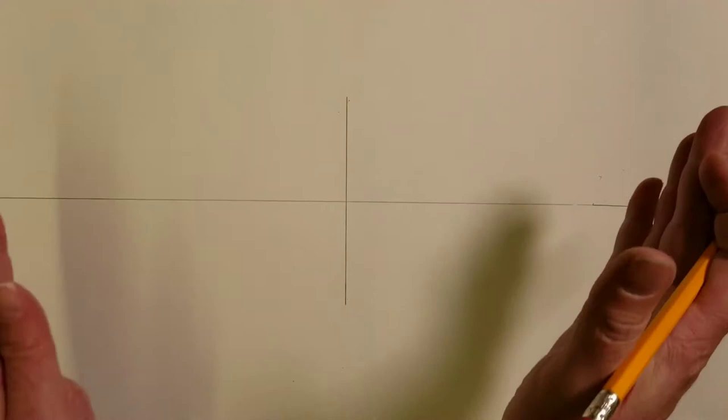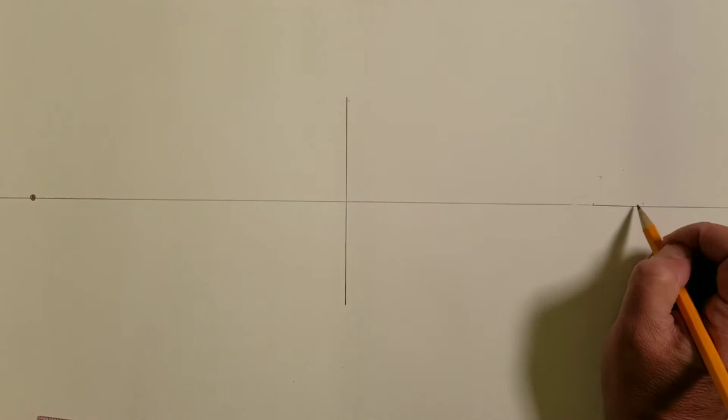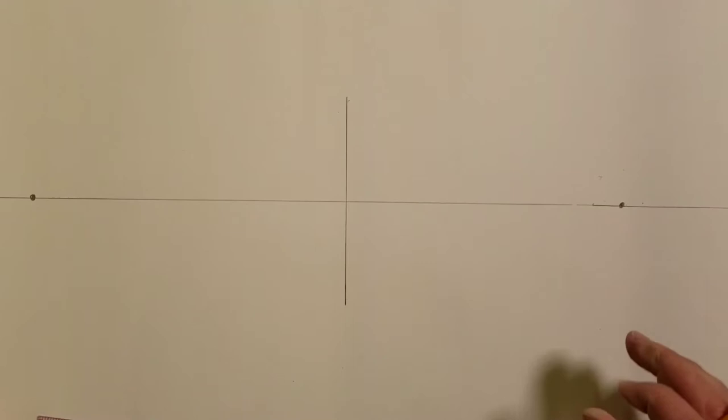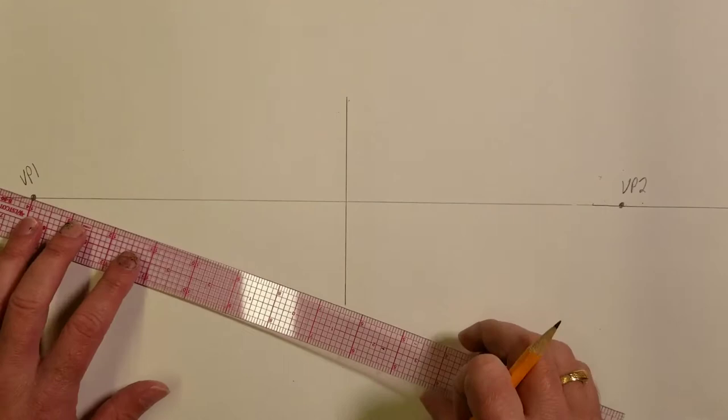Now we want to set up our two vanishing points. We're going to have one on the right and one on the left. They should be at basically a 45 degree angle to each other, about the same distance apart. You can just guess with this. Some people do measure it out when you get really technical, but for our purposes let's just throw it on. So we're going to label these VP1 and VP2 for vanishing point 1 and vanishing point 2.